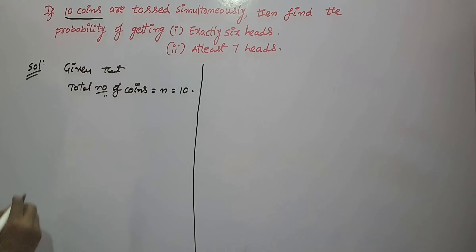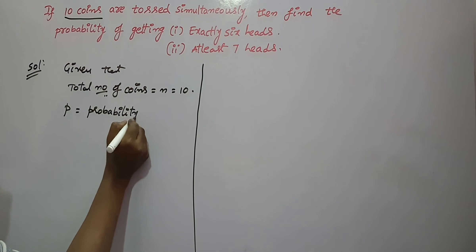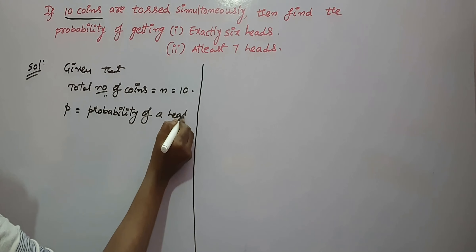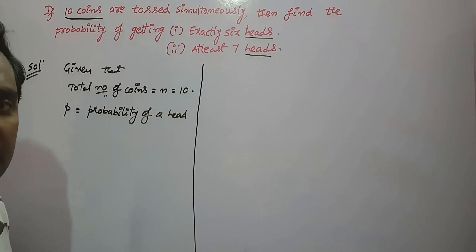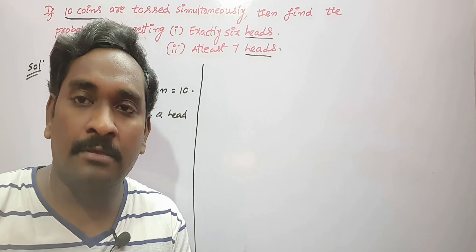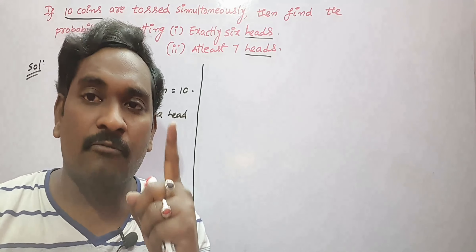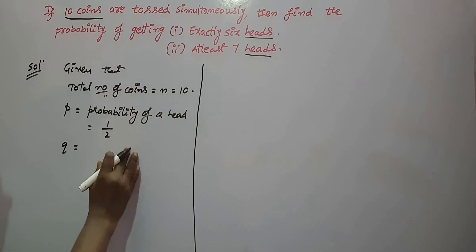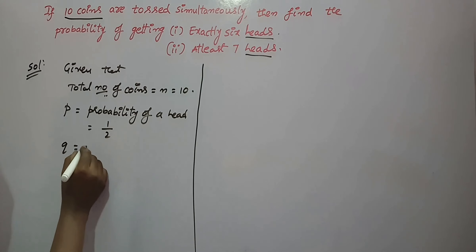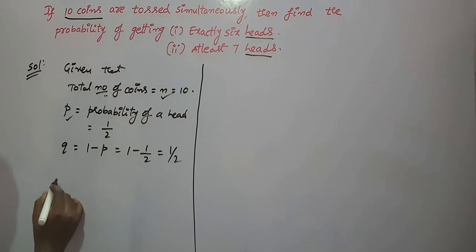We take the total number of coins as small n, so n = 10. Now, p is the probability of getting a head. Since our problem is related to the number of heads, if you toss only a single coin, the probability of getting a head is 50%, which is 1/2. Therefore q, the probability of a tail, is 1 − p = 1 − 1/2 = 1/2. Since n, p, and q are all known, we will apply binomial distribution.